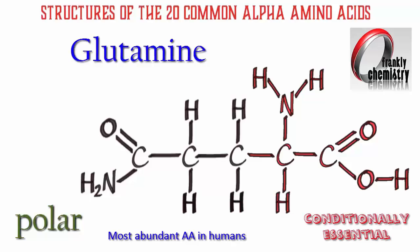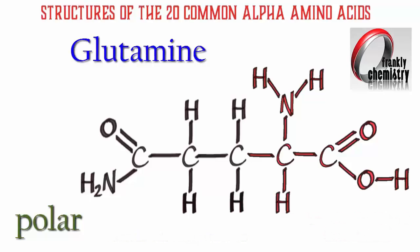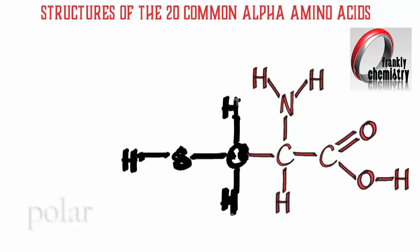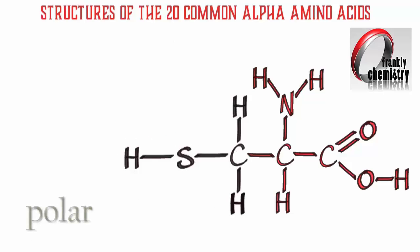Glutamine is the most abundant of the amino acids found in humans. It's referred to not as essential, but as conditionally essential — for example, in cases where the staple diet in a country happens not to include enough glutamine.